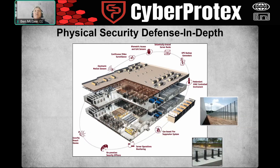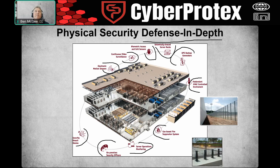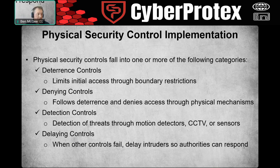Practicing defense in depth for a facility can be quite complicated. You could have any type of breach alarms, on-premise security officers, server operations, gas-based fire suppression, redundant HVAC, UPS generators, seismically braced server racks, biometric access and exit sensors, continuous video surveillance, electric motion monitors, plenum space between server racks — and the list goes on. There are quite a few controls we can put in place.